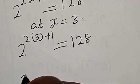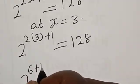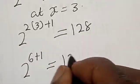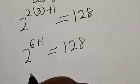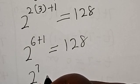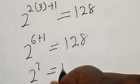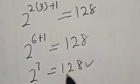Now we have 2 raised to power 2 times 3, that is 6 plus 1. Must be equal to 128. Then this is 2 raised to power 7 is equal to 128. We satisfy the given equation at s is equal to 3.